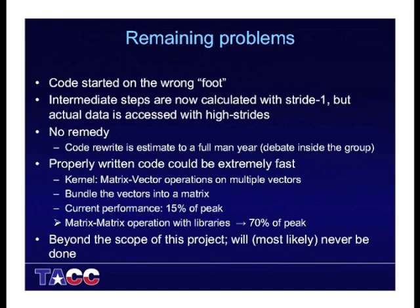Let's talk about remaining problems. One problem is that the code started on the wrong foot. With the changes, the intermediate steps and data are now calculated with stride one, but the actual data is still accessed with high strides. There's no remedy except to completely rewrite the code. My estimate is that this is a full man-year of work — one experienced person for a year. Most team members agree with that, though some think it might take only two weeks. I don't think that's realistic. It would be my man-year to rewrite the code, at full time.